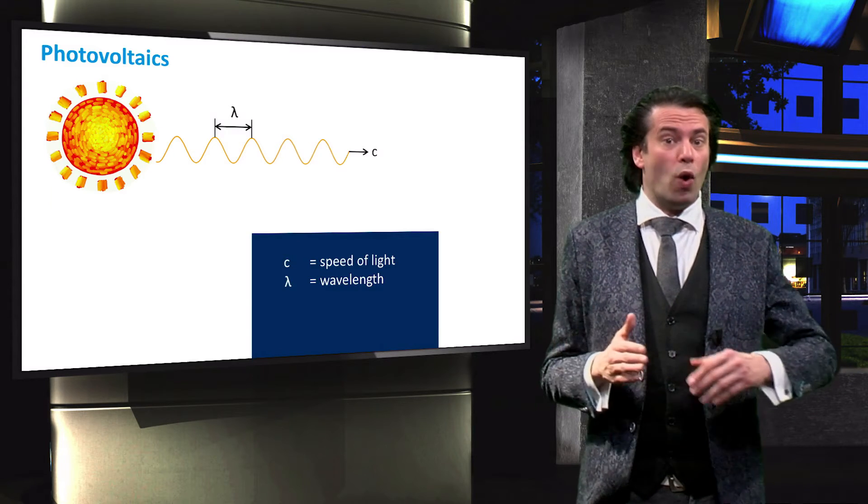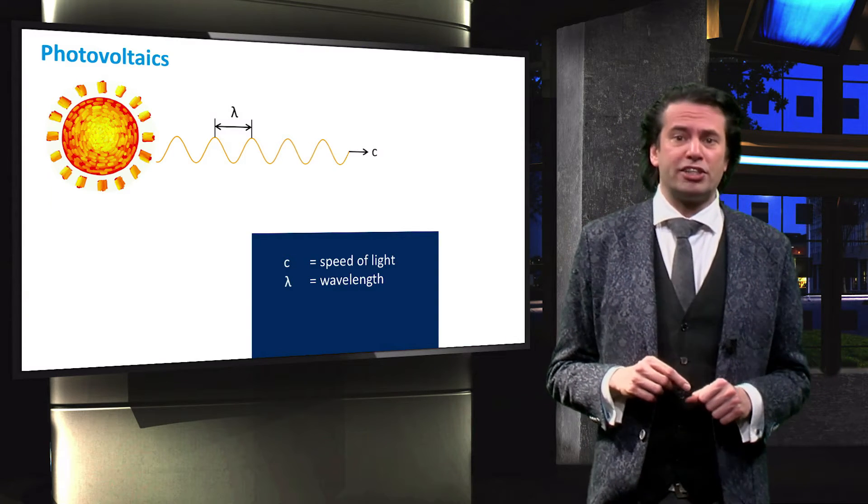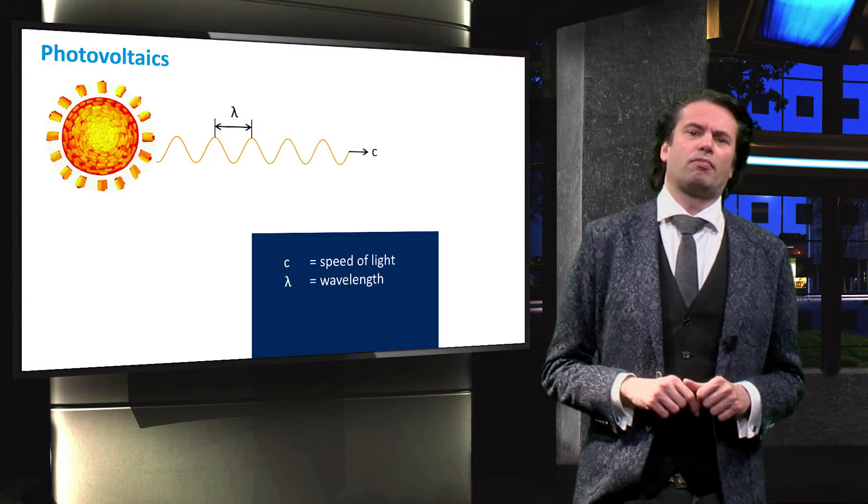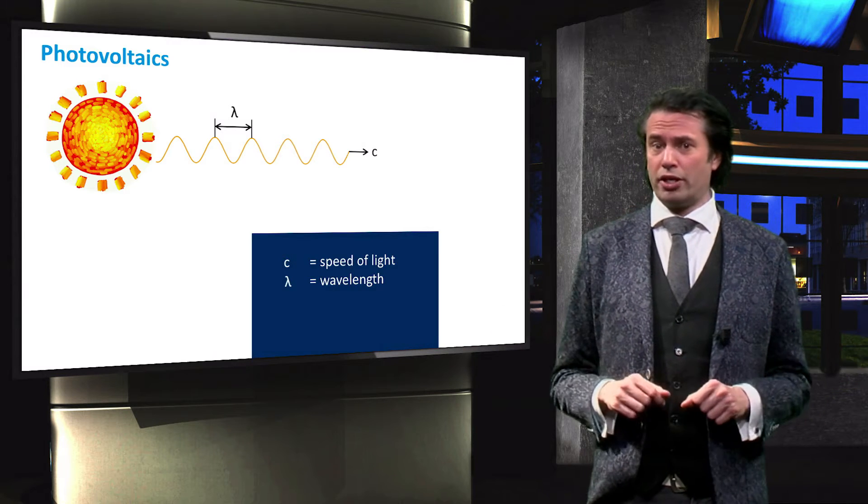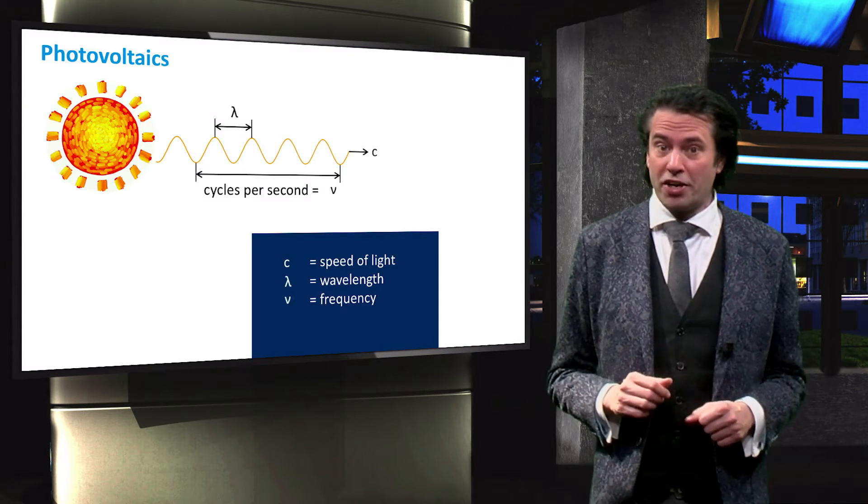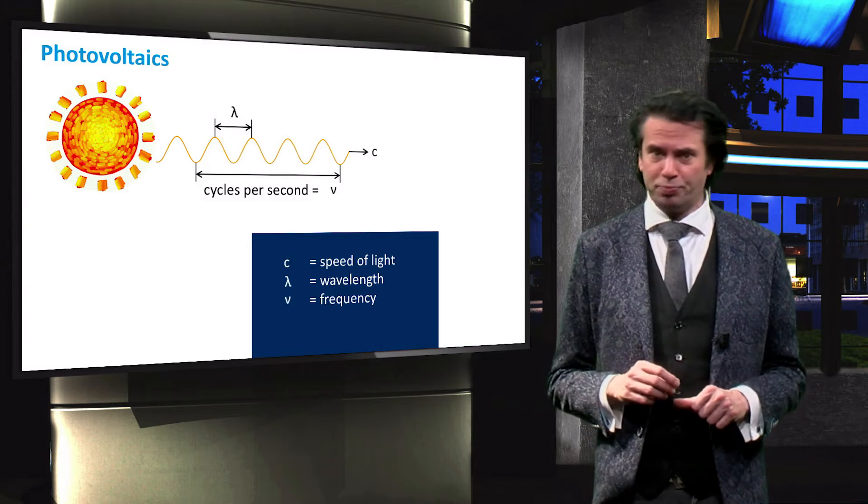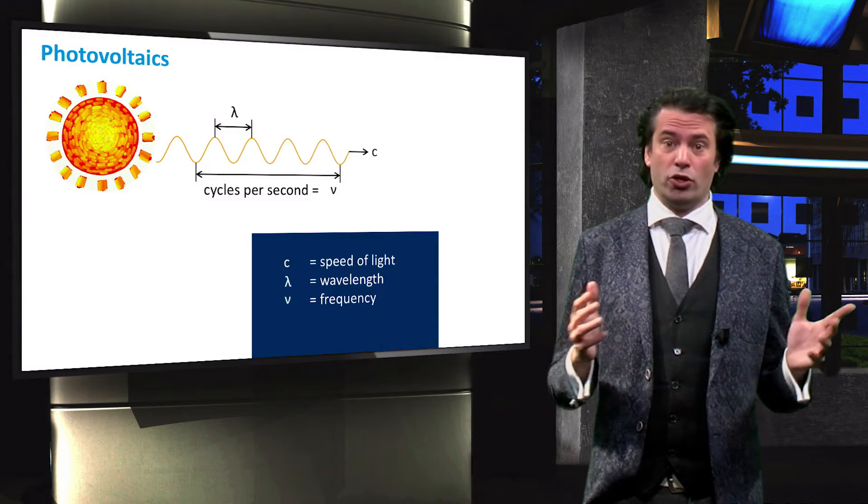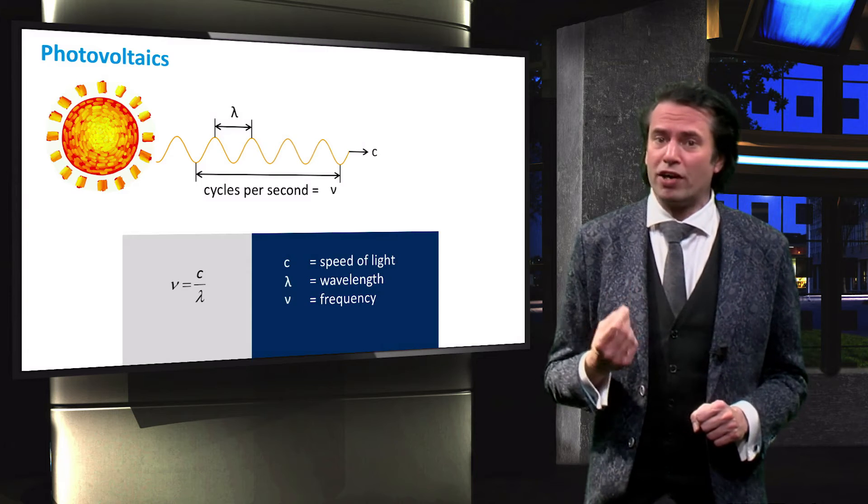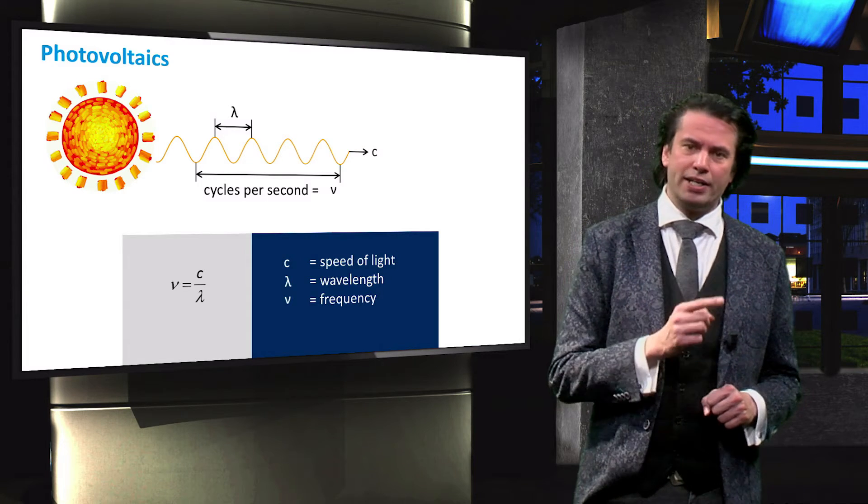Over a distance of one wavelength, the wave undergoes exactly one cycle. The number of cycles that occur in one second is known as the frequency, indicated by nu. The frequency expressed in Hertz is equal to the speed of light divided by the wavelength.